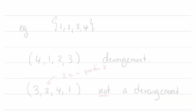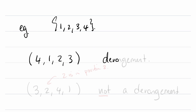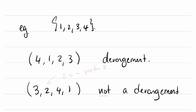Here's an example. Say we start with the set {1, 2, 3, 4}. The list (4, 1, 2, 3) is a derangement: 1 is not in the first position, 2 is not in the second position, etc. However, (3, 2, 4, 1) is not a derangement because 2 is in position 2.